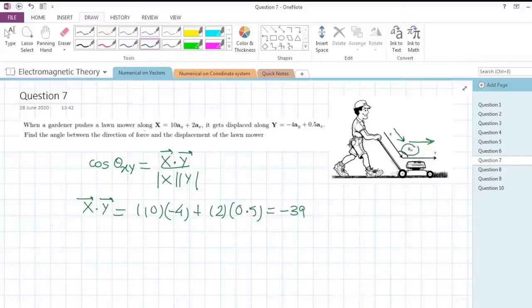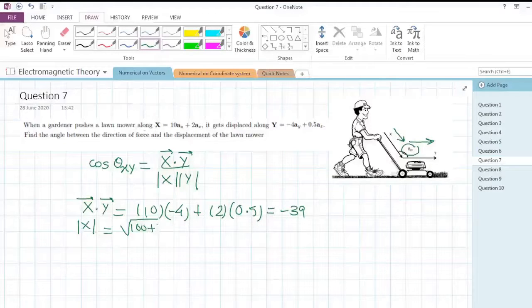Let's find the magnitude of x and y separately because we'll need it. The magnitude of x will be the root of 100 (that's 10 squared) plus 4 (that's 2 squared), which gives root 104, which equals 10.2.